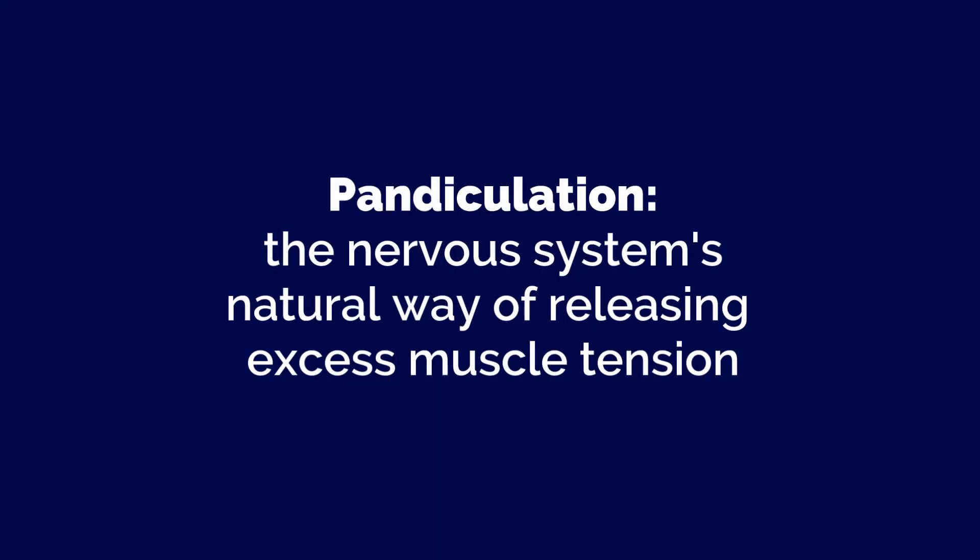So if static stretching doesn't work, how are we supposed to lengthen our muscles and reduce our muscle tension? The answer is pandiculation. Pandiculation is our nervous system's natural, built-in way of releasing excess tension in our muscles. I'll be talking more about pandiculation in my next video, which will be all about the gamma loop — a feedback loop in our nervous system that regulates the level of tension in our muscles. So stay tuned for that video.